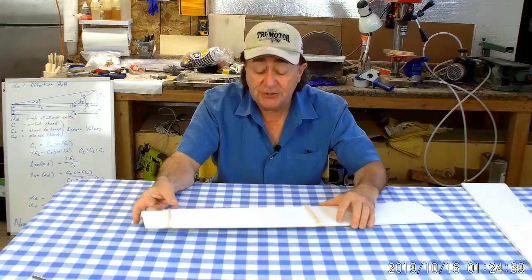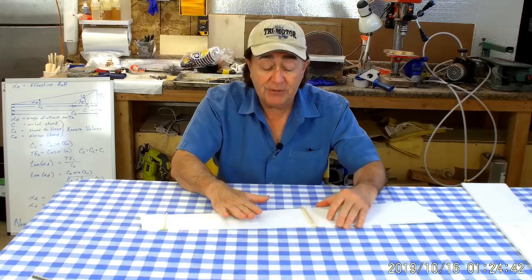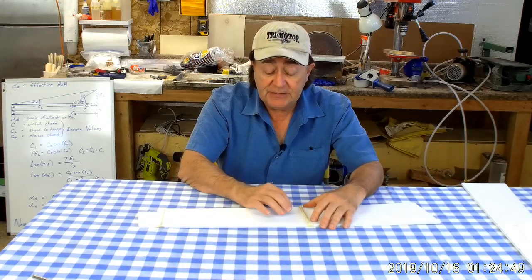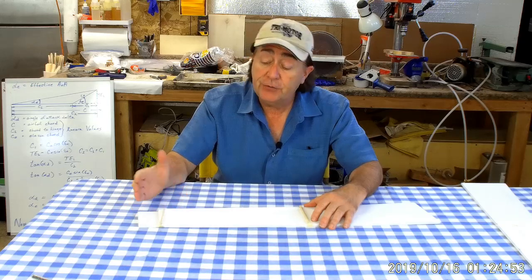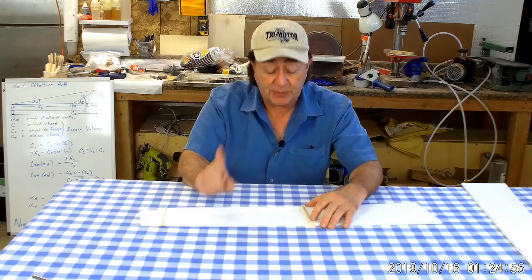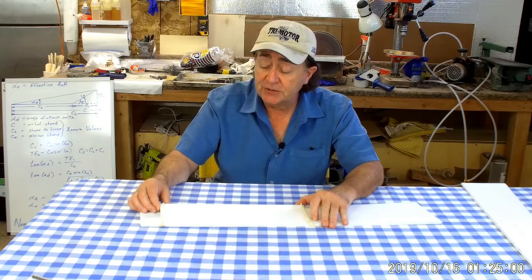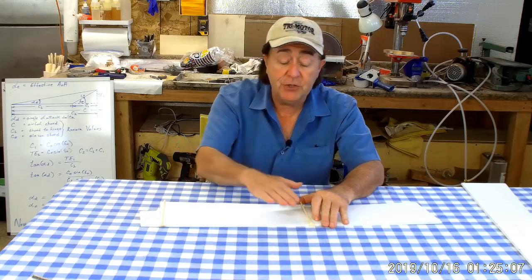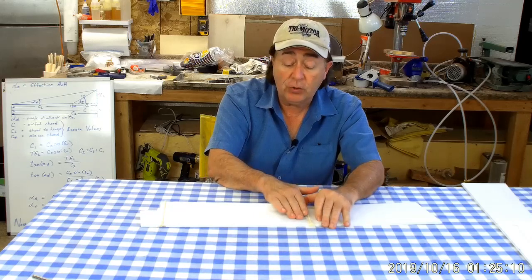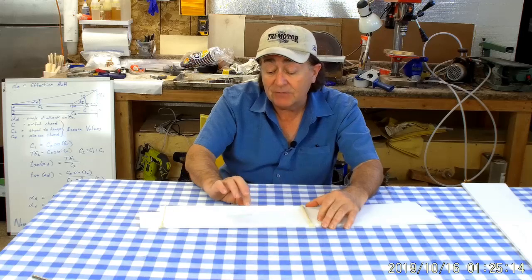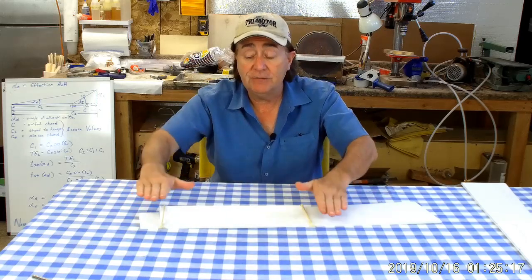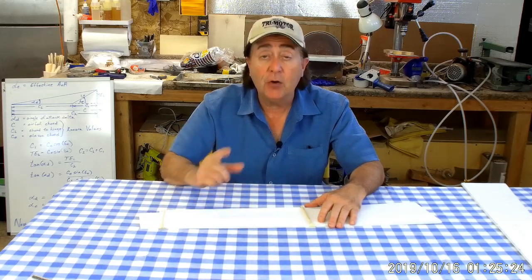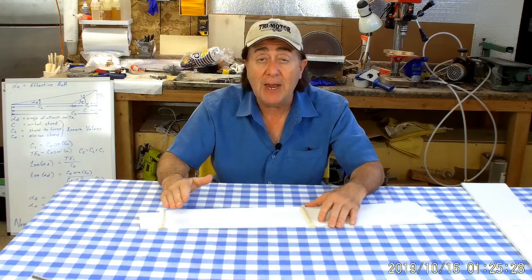Then the question becomes: how much? There are three parameters involved: the taper of the wing, the initial washout in the wing, and the shape of the elevon itself. There's a fourth factor — the airfoil selection — which I'll get to later. To calculate the right shape, we have to know what this effective chord line is doing: how the relative chord line angles change as the elevon goes up and down. That involves a little geometry and trigonometry.